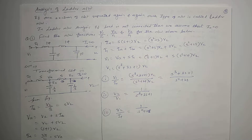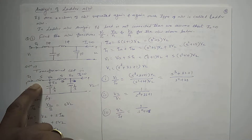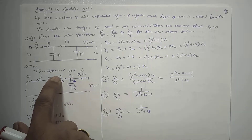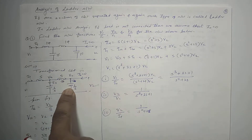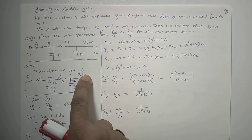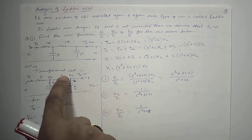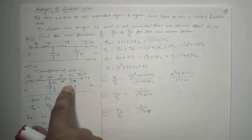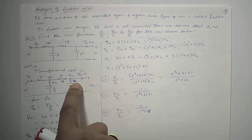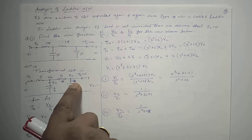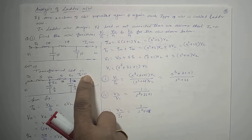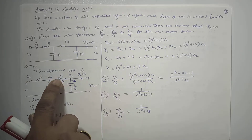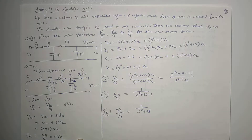Then we define every branch current. We have branch current I1. We assume branch current IA, branch current IB. The output current IC would be I2, but since I2 is zero, the current flowing through this branch and the adjacent branch is the same — and therefore we call it IB.